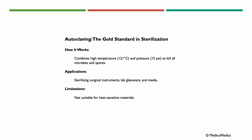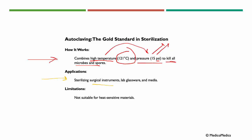An autoclave is like a super-powered pressure cooker, used in hospitals and labs to make tools completely germ-free. It's fast, effective, and very reliable. It works by combining high temperature — 121 degrees Celsius — and pressure of 15 pounds per square inch (psi), using this combination to kill all microbes and spores. Applications include sterilizing surgical instruments and lab glassware. Limitation: it is not suitable for heat-sensitive materials.